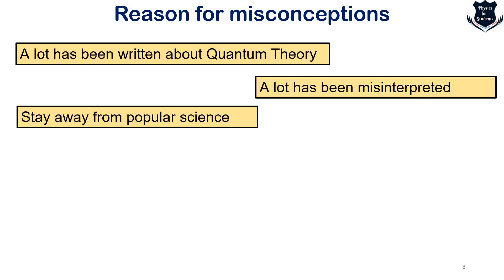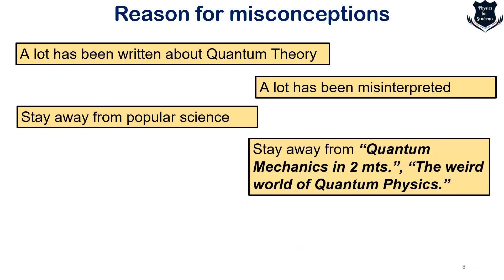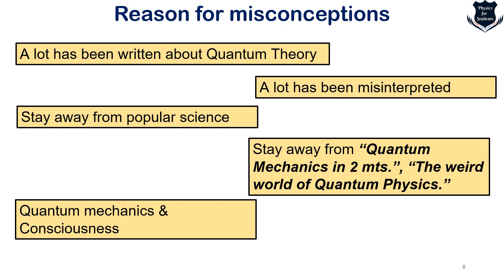Stay away from popular science — it doesn't give you the mathematical or rigorous definition and you fall into misconception. There are concepts like quantum mechanics in two minutes, the weird world of quantum physics, quantum mechanics and consciousness — I won't say these are not true, but there has been a lot of misinterpretation. For those who have started reading quantum physics, please start learning from sources that give the right rigorous mathematical direction.